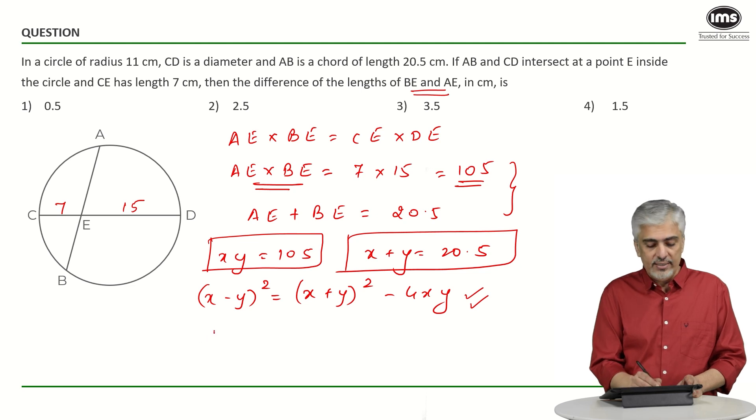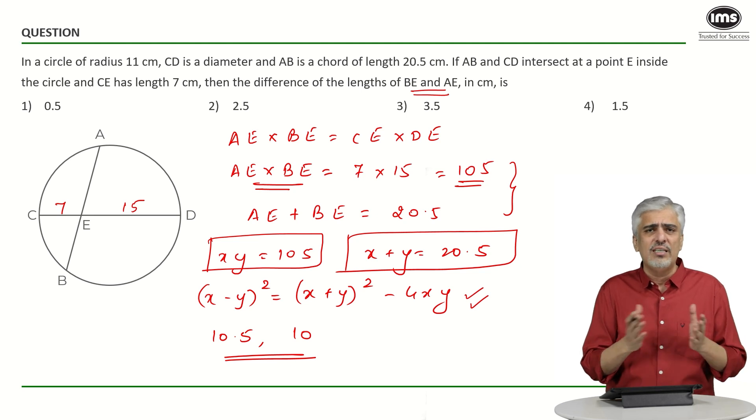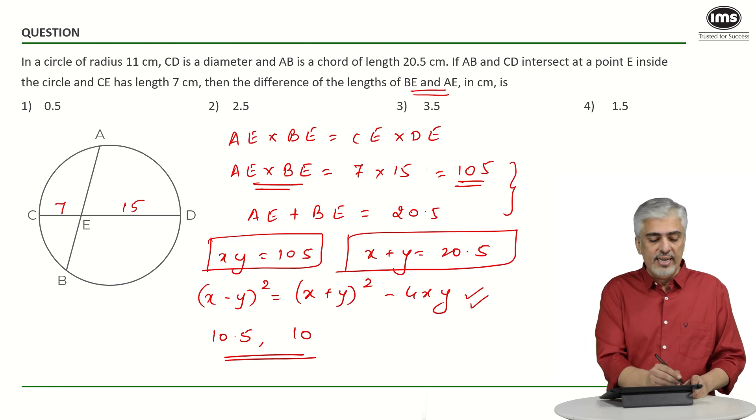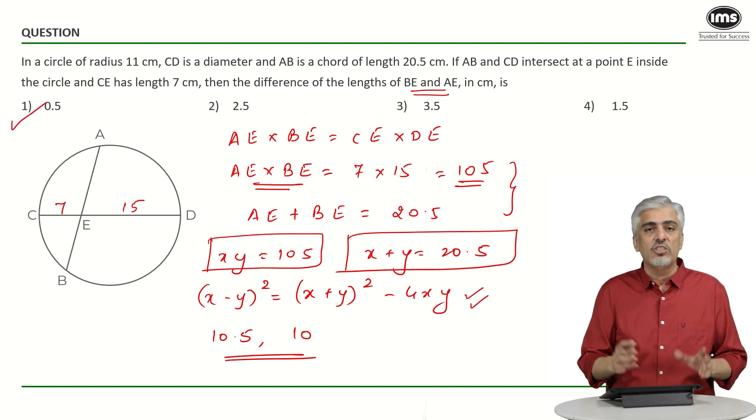The numbers were 10.5 and 10—just a little contemplation here and there. We wanted to find the difference between the two numbers, and hence the answer was 0.5, the first option. As usual, do not forget to solve the replica question and give your answers in the comment box.